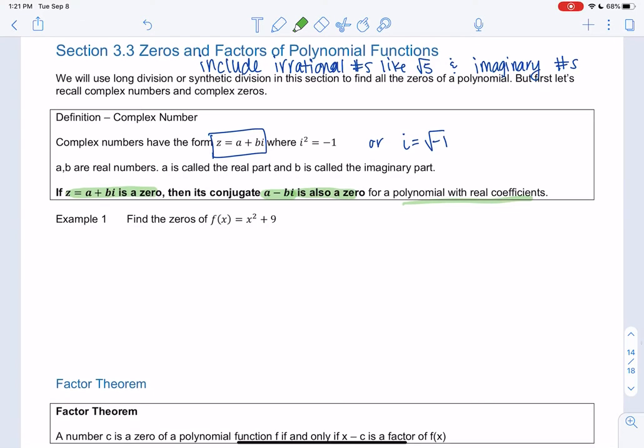So let's find zeros of x squared plus 9. So we're going to set it equal to 0. This doesn't factor, right? We can factor difference of squares, but we can't factor sums of squares.